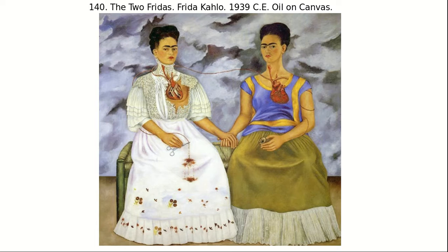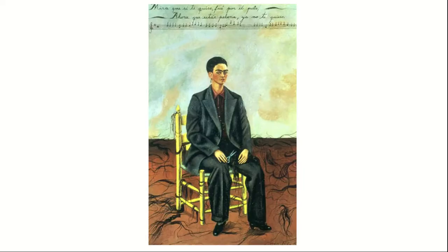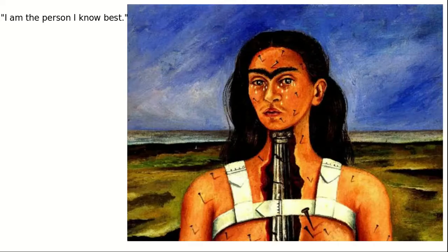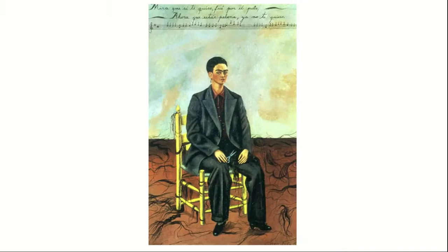A good takeaway: you have these two Fridas where one is weak and the other is strong — one is heartbroken from the divorce, but the other is there to carry her through it. The visible anatomy in her artwork is also related to her physical ailments from her accident as a teenager.